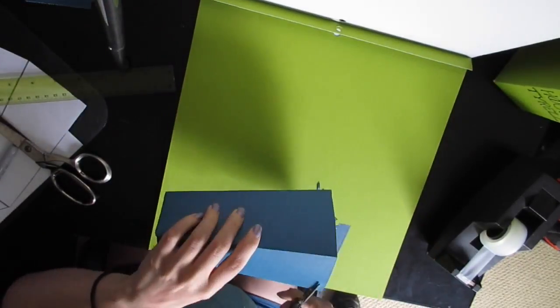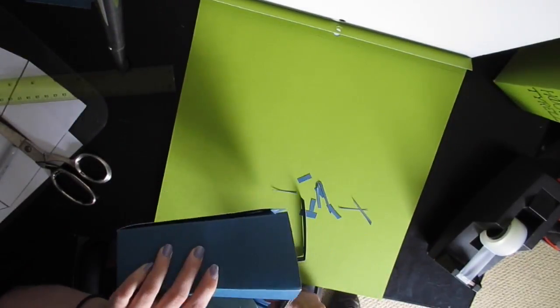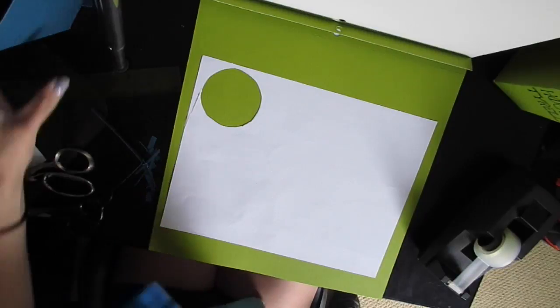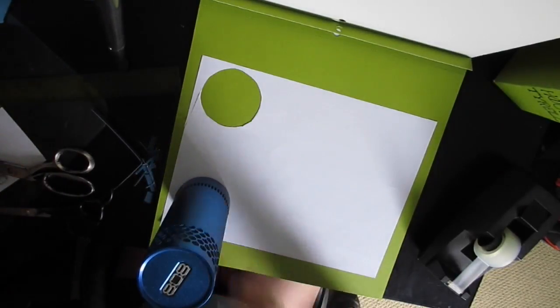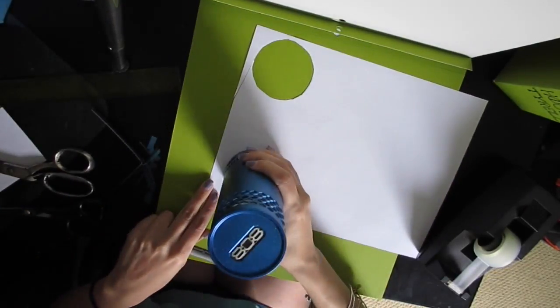Also, don't forget to tape the inside of your popcorn box. For the next part, take something that's circular on the bottom so you can trace a perfect circle.